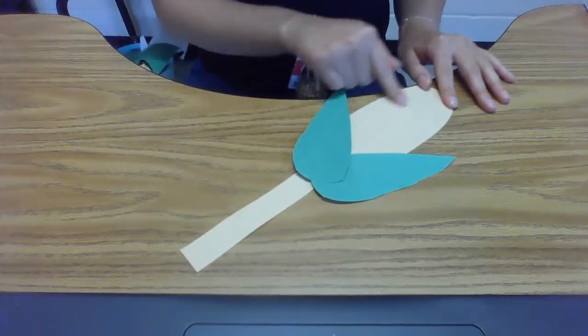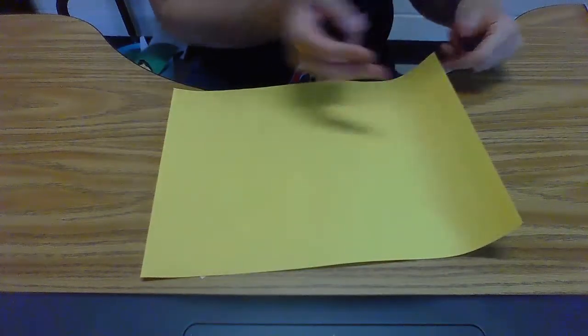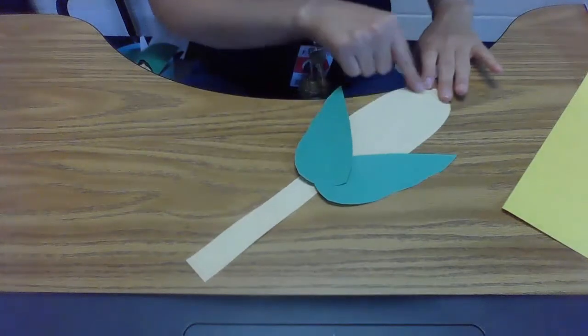All that's missing now is the yellow kernels. So from your yellow piece of paper, cut a bunch of small yellow squares to glue onto the corn ear.